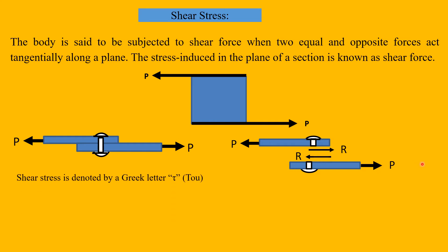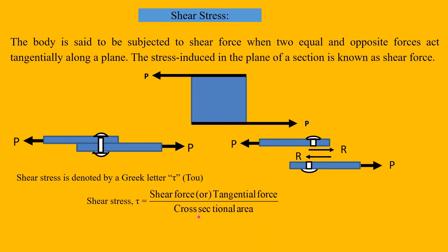Shear stress is represented by the Greek letter tau. As per the definition, shear stress is shear force or tangential force divided by cross-sectional area. Here shear force is P and cross-sectional area is A, therefore tau equals P divided by A. The next concept is strain.